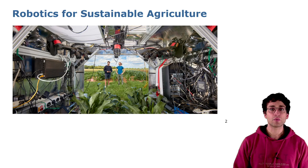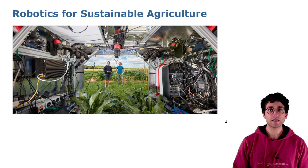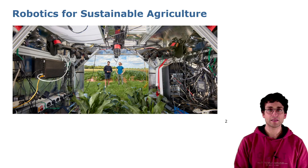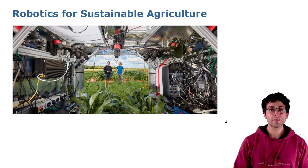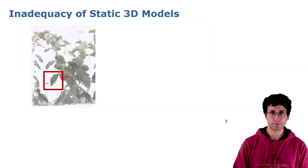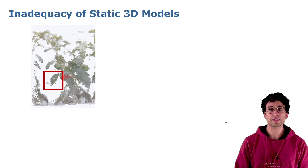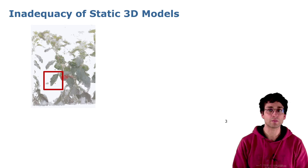One of the main aspects that is important to automatize in this context is phenotyping. Phenotyping is the measure of plant characteristics. Sometimes it is useful to keep track of these characteristics over time in order to understand their evolution. Automatic phenotyping is usually performed on static 3D representations of plants. Static 3D models can also be inadequate if we want to measure the same organ in different moments over time.